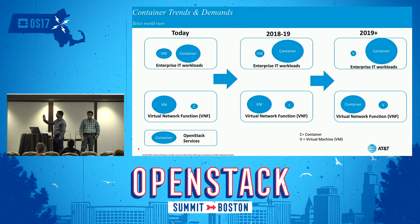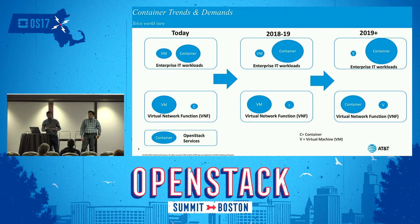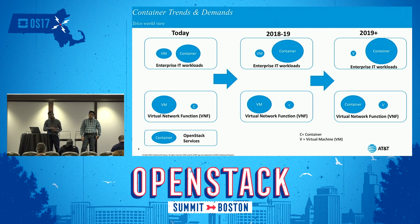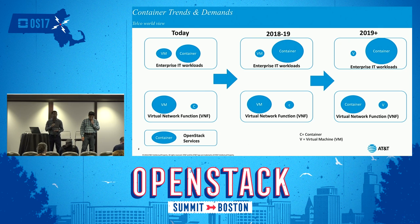In this chart, you can see that today, if you take the enterprise workload — the top portion of the slide — the enterprise workload can already start using containers. Most enterprise workloads like application servers and web servers can already move towards containers, and VM utilization is actually going down. When we move into 2018 and 2019, there's going to be a much larger adoption of containers and a very small number of VMs.